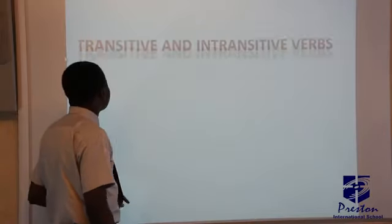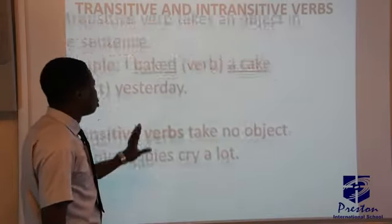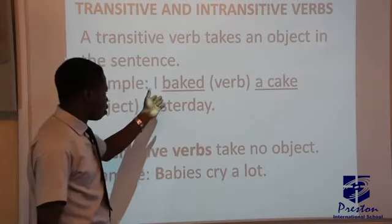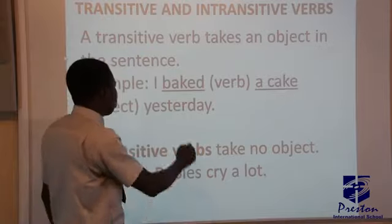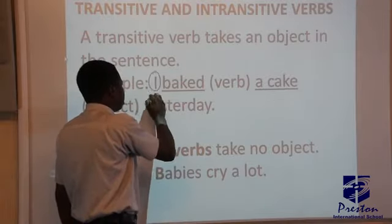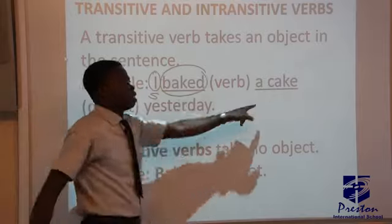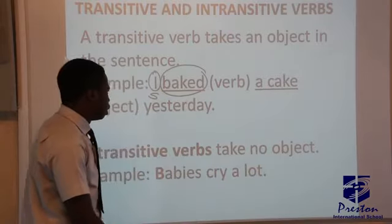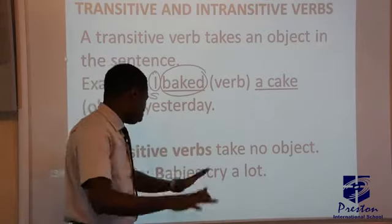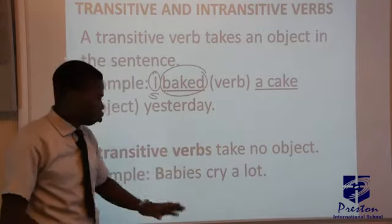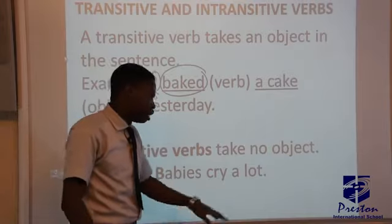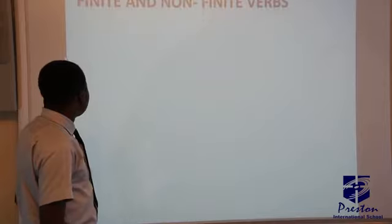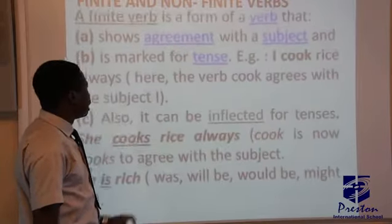Transitive verbs take objects. For example, 'I baked a cake' — 'I' is the subject, 'baked' is the verb, and because it is followed by an object it is a transitive verb. Intransitive verbs take no object. For example, 'Babies cry a lot' — 'babies' is the subject, 'cry' is the verb, and there is no object.